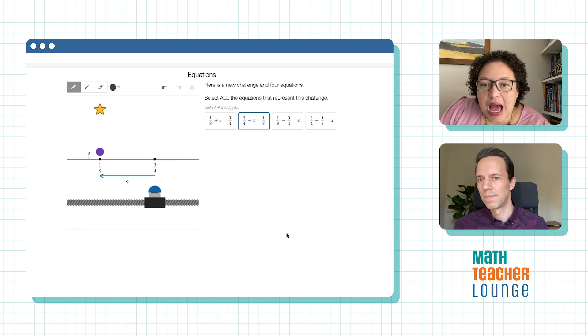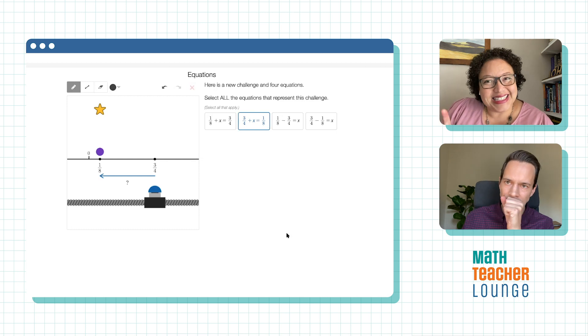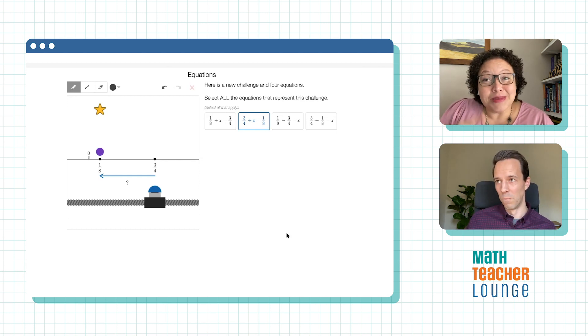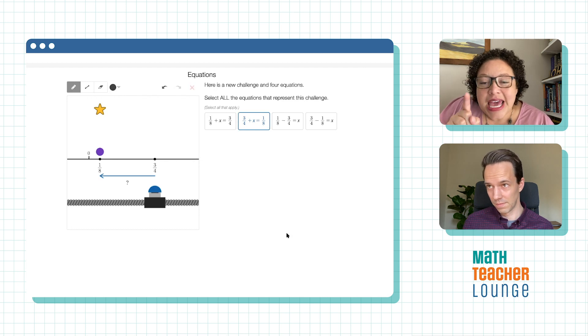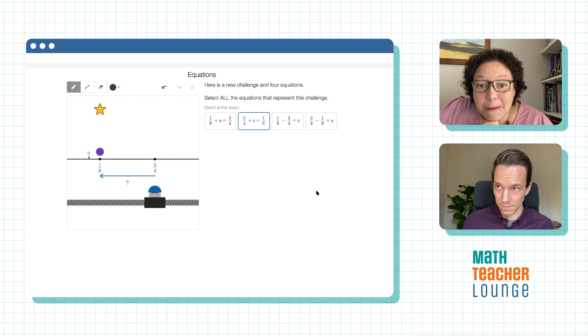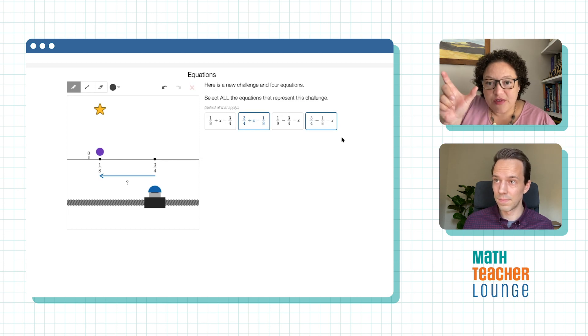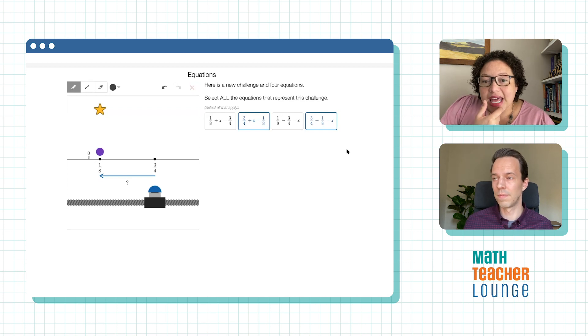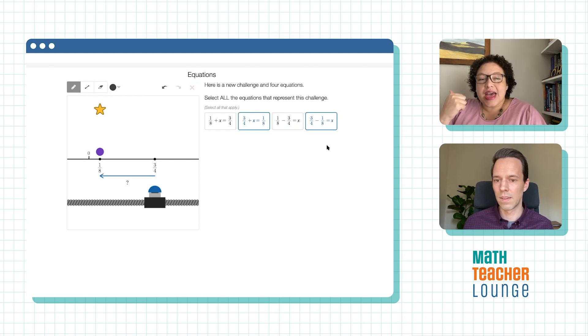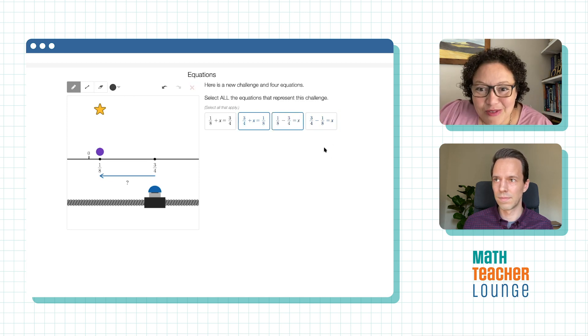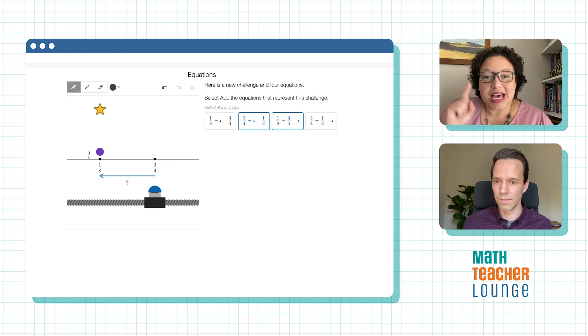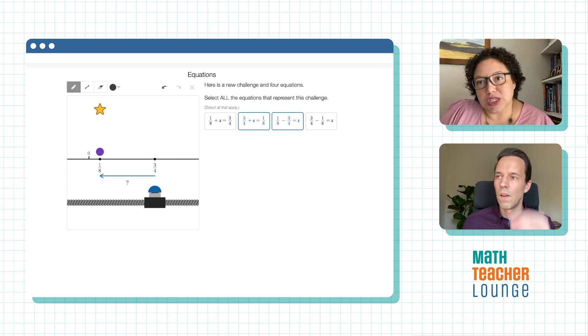So I think a very, I gotta say a very tempting answer and when I'm tempted to say, but then I had to kind of think about it a little more is that last one, three fourths minus one eighth equals X, because I want to find out that distance, the difference between those two. And then I thought about that a little bit more. And I said, but which direction would that actually move the bumper? So then it made me go to the third one, which is one eighth minus three fourths equals X. But I can see myself initially choosing the three fourths minus one eighth equals X.